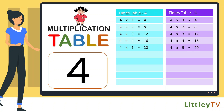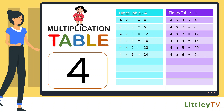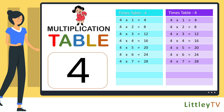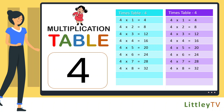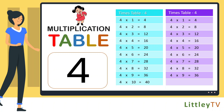4 sixes are 24, 4 sevens are 28, 4 eights are 32, 4 nines are 36, 4 tens are 40.